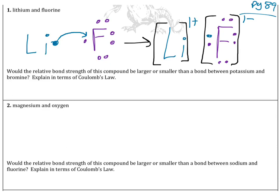The first question asks whether the relative bond strength of this compound — lithium fluoride — would be larger or smaller than the bond strength between potassium and bromine. Looking at the periodic table, lithium is a smaller atom and fluorine is also a smaller atom, compared to potassium, which is a larger atom, and bromine, which is also a larger atom.